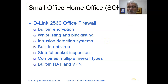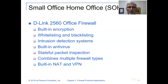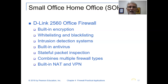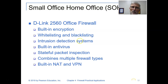The D-Link 2560 Office Firewall has a lot of features: built-in encryption, whitelist and blacklisting, intrusion detection systems, built-in antivirus, and stateful packet inspection. It combines multiple different firewall types and has built-in NAT and VPN. So it has a lot of benefits to it.